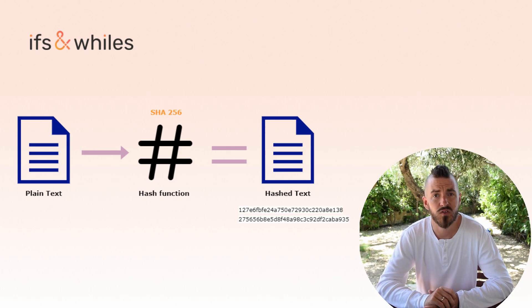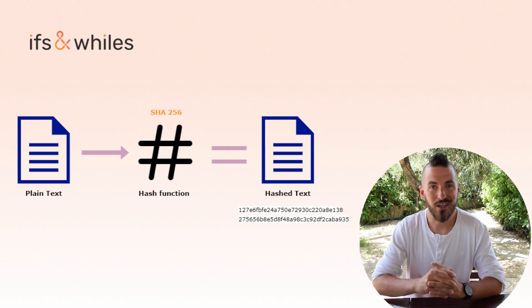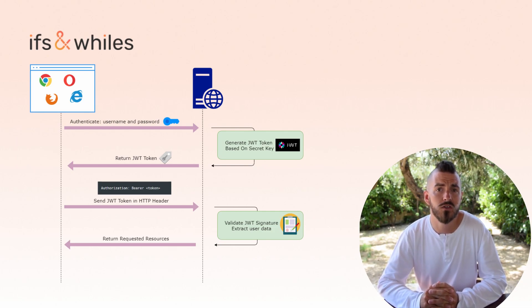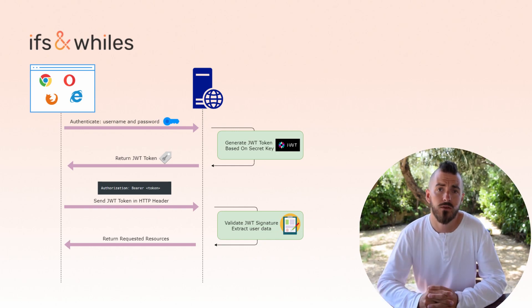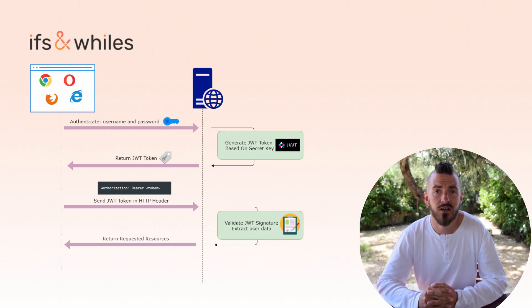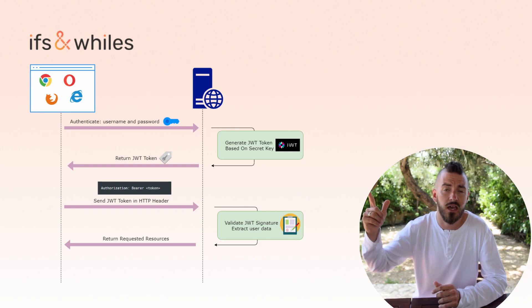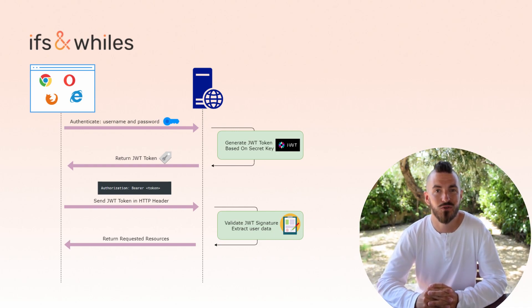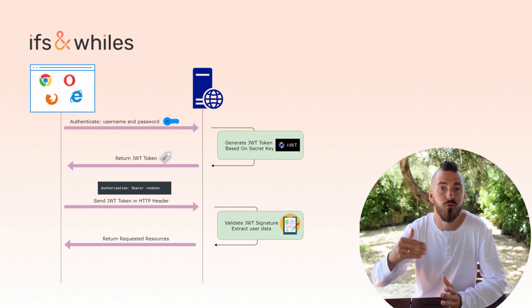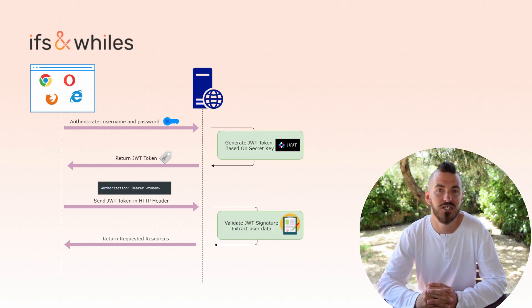This method is less secure because within your application you need to store that secret key. You already know what stateless authentication is, how a JWT token is built, and what problem it solves. Now let's talk about how to use JWT in practice. Once the user successfully logs in with their credentials, the token is returned. From now on, a token is added to all requests when users want to access protected resources, usually in the authorization header using the bearer schema. The content of the header should look like: Authorization: Bearer [your token]. Your application then needs to read the token from the authorization header and validate the correctness of the token by comparing the signature with data from the header and payload section.